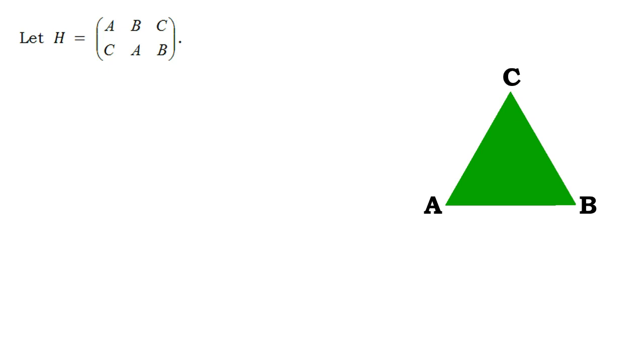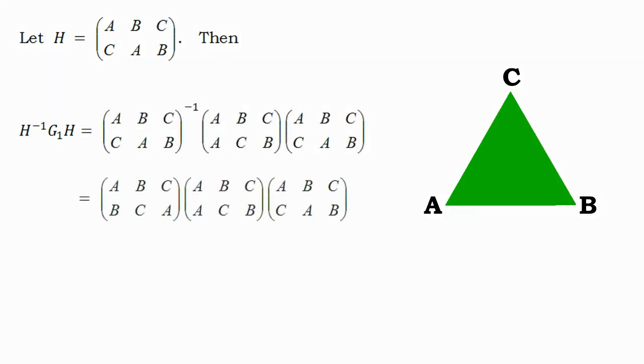Let's take H to be the triangle CAB. On performing simple multiplication of permutations, we can show that H inverse times G1H is equal to G2. Therefore, G1 is conjugate to G2.